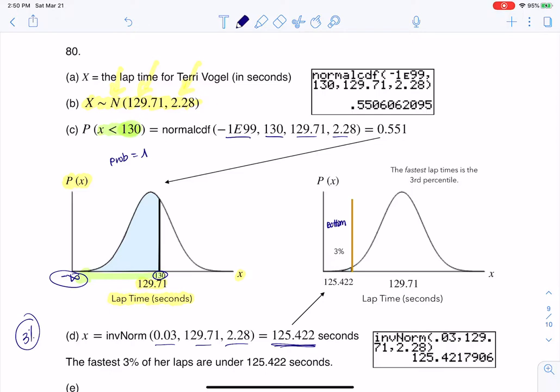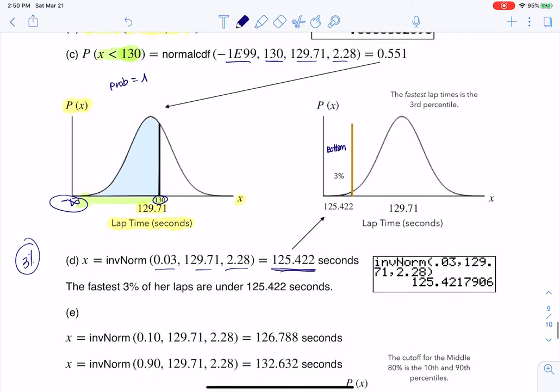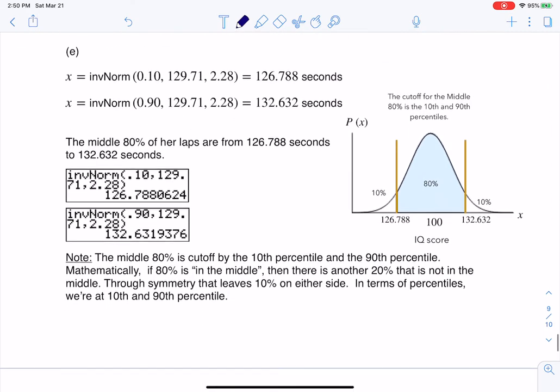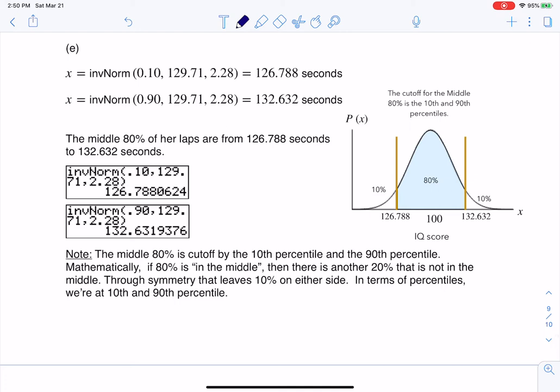The next thing asks you for the middle 80%, and we don't have middles on our calculator, all right? Our calculator is only built in on-down mode. So if I want the middle 80%, we have to convert middles to percentiles.